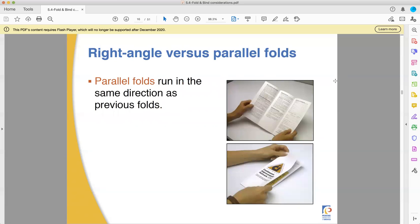Parallel folds all run the same direction. Think tri-fold brochure. That is the best example of a parallel fold. All the folds are parallel to each other. They all go the same direction. Parallel folds are easier to accomplish because you never have to fight against the grain if you use the right grain direction in the first place.